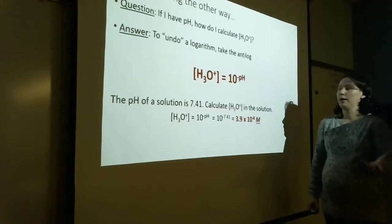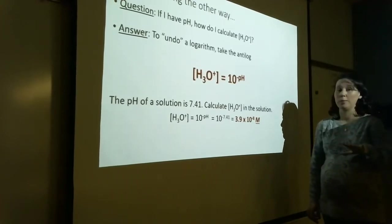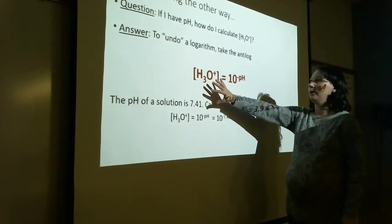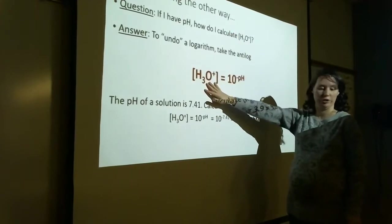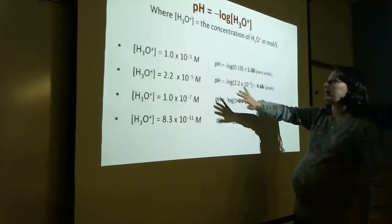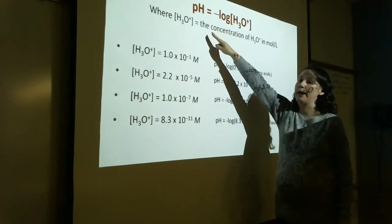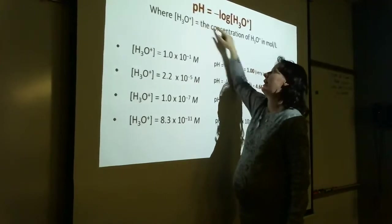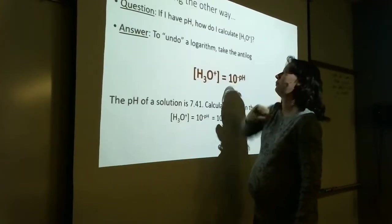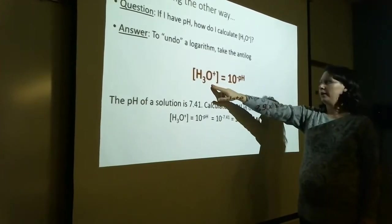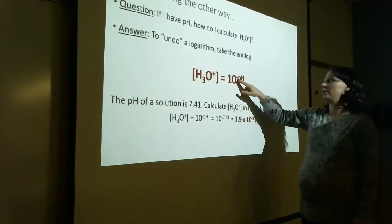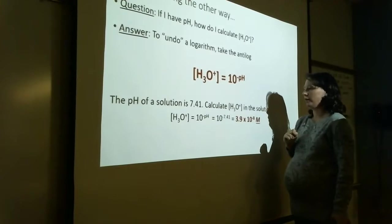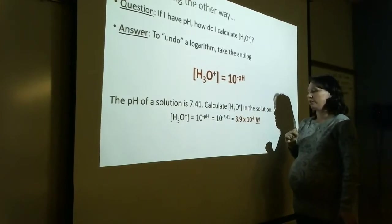Now the other direction — we also need to address this, and it's a common mistake I see especially from my online students. How do I take a pH and turn it back into a concentration? If we took log base 10 to get pH, when we undo that by raising both sides to the 10, that gets rid of the logarithm. So the concentration equals 10 raised to the negative pH. Here's an example: the pH of a solution is 7.41 — what is the hydronium ion concentration?